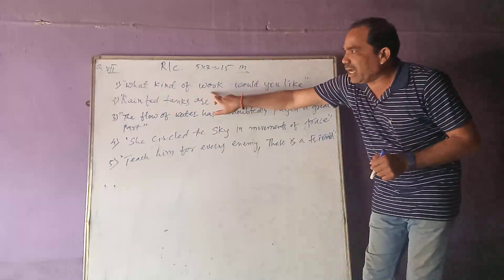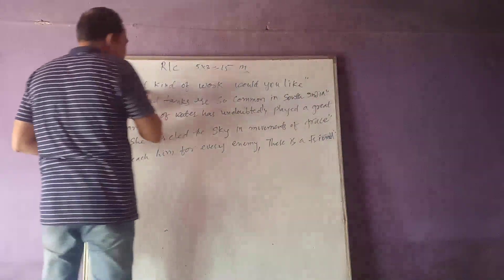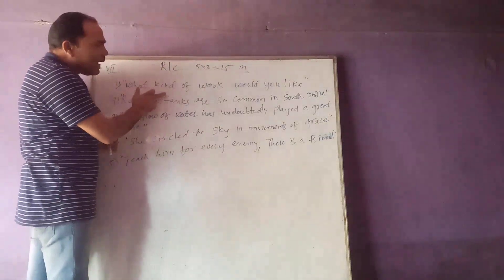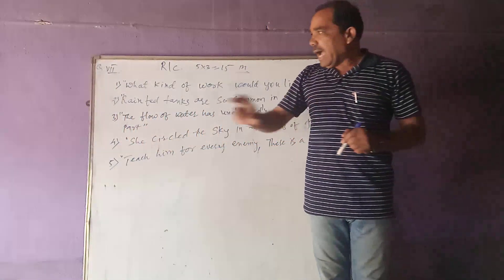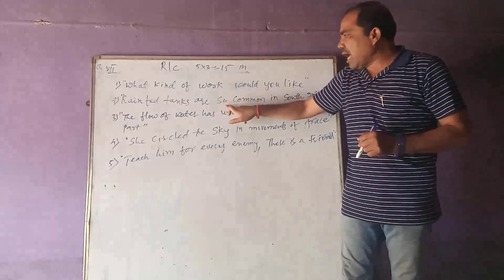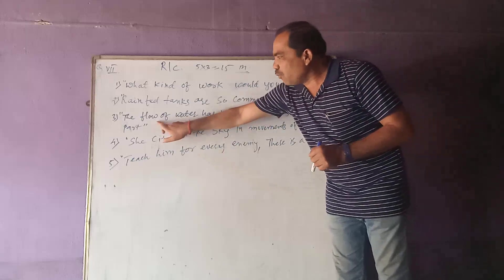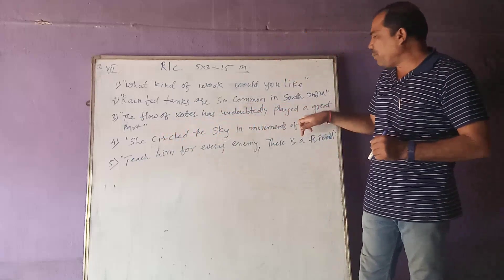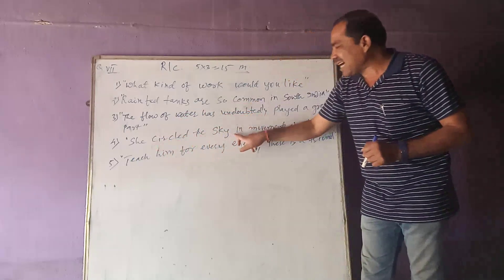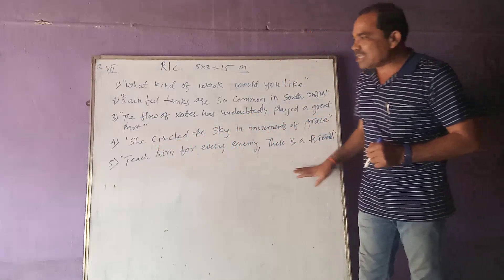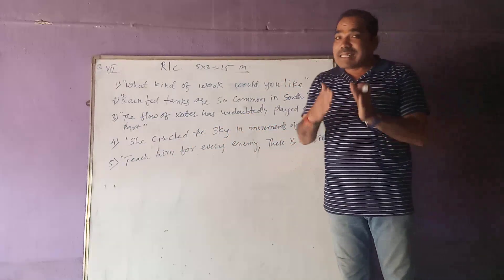My aim is to help you understand what 'reference to the context' means. The first problem is: 'What kind of work would you like?' The second is: 'Rain-fed tanks are so common in South India.' The third is: 'The flow of water has undoubtedly played a great role or great part.' The fourth is: 'Circle the sky in moments of grace.' And the fifth is: 'Teach him for every enemy there is a friend.'